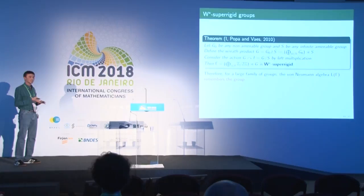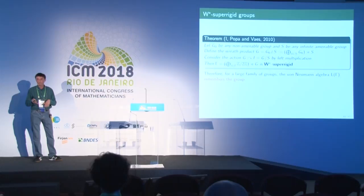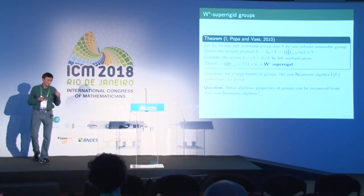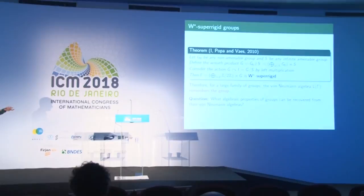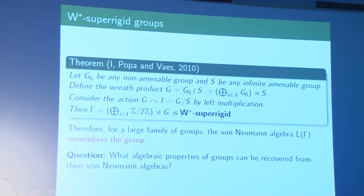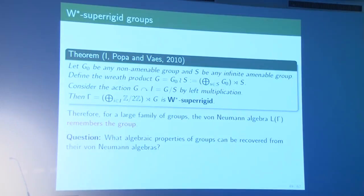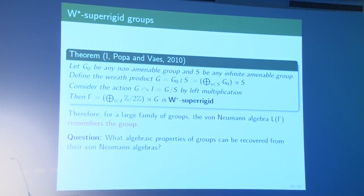In general, one can only expect to recover partial information about the group from the von Neumann algebra. The question is: what algebraic properties of a group Γ are remembered by L(Γ)? If Γ is amenable, no properties are remembered. If Γ is non-amenable, sometimes the whole group is remembered. I'll now give several results addressing this, starting with prime II₁ factors. A II₁ factor M is called prime if it is not a tensor product of two II₁ factors M₁ and M₂.